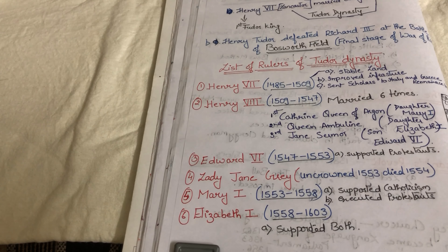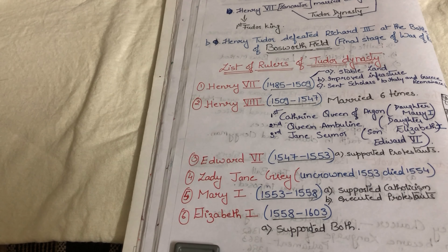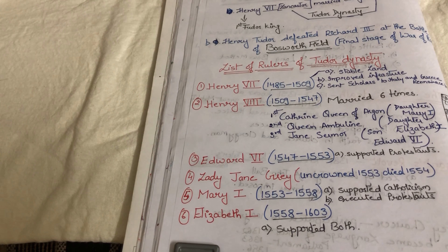So the Tudor Dynasty rulers were: Henry VII, Henry VIII, Edward VI, Mary I, and Elizabeth I. From Elizabeth I, we will start the Elizabethan Age.